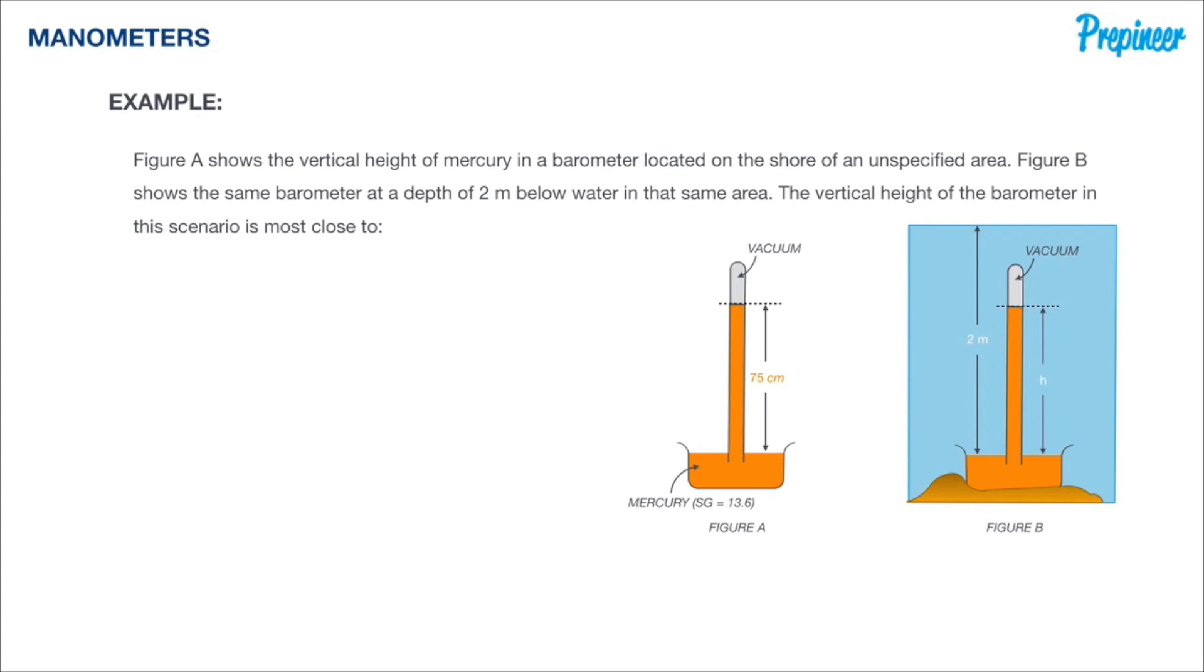But it does give us the height of the mercury column in the barometer, gives us the specific gravity of the mercury, and tells us that the vapor pressure above the mercury is in vacuum.